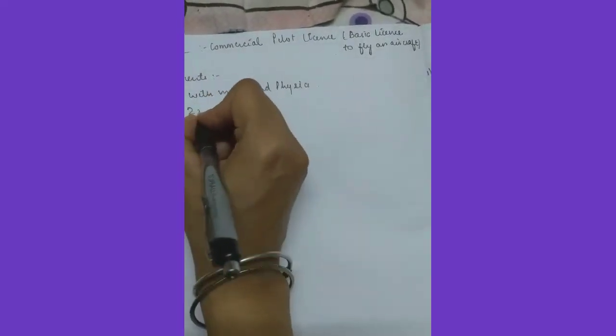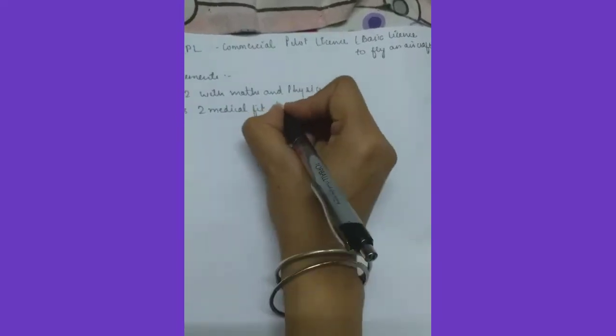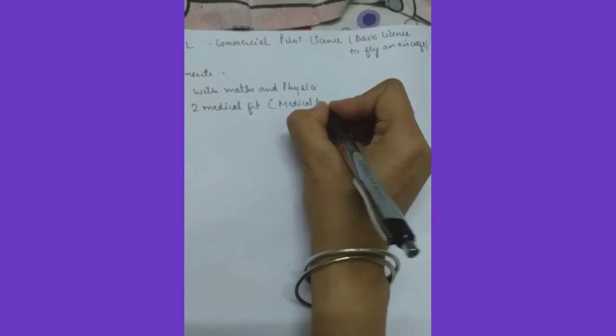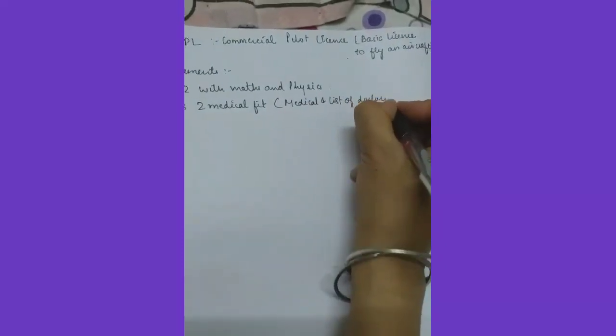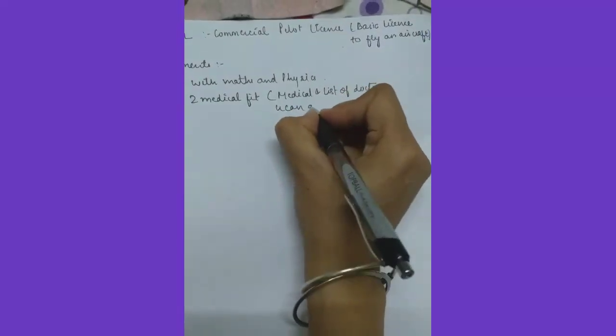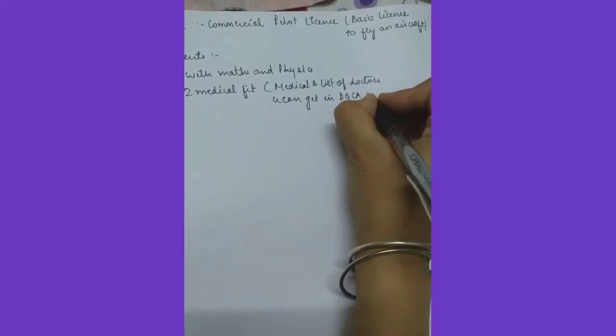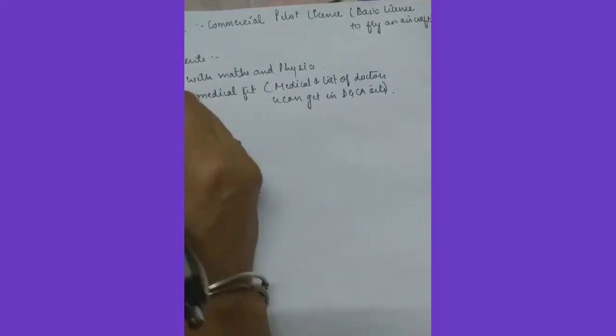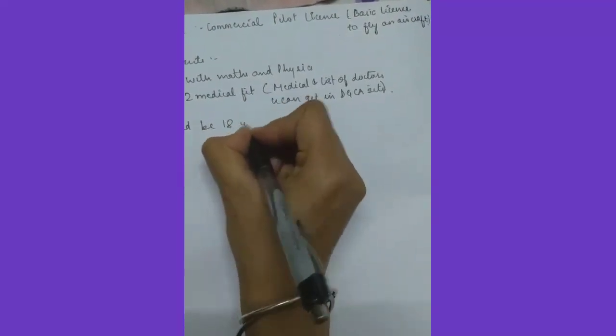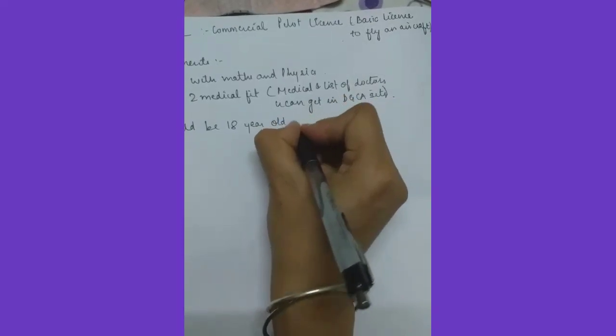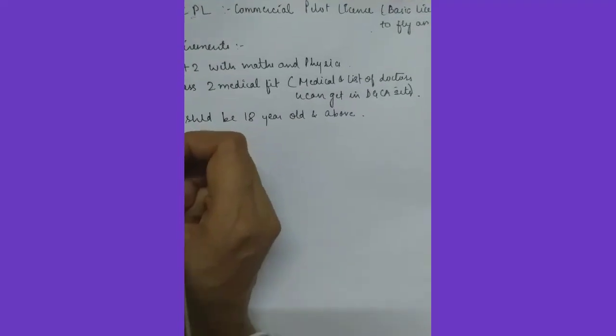Second, you should be having class 2 medical fit. That medical list of doctors you can get in DGCSI. Thirdly, you should be 18 years old and ever before going for flying, you should pass few exams.